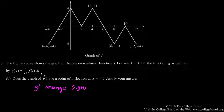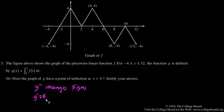As we talked about in part A, g prime is equal to f because g is equal to the integral of f. Taking the derivative of both sides, g prime equals f of x. And so this means that g double prime equals f prime.